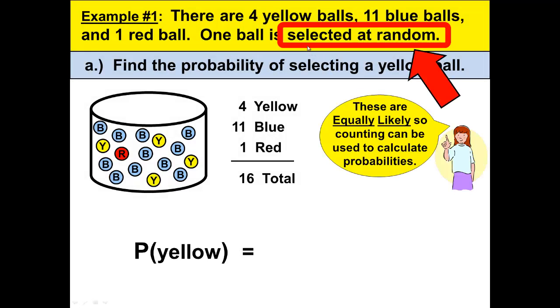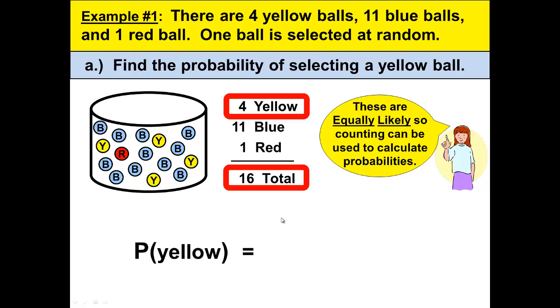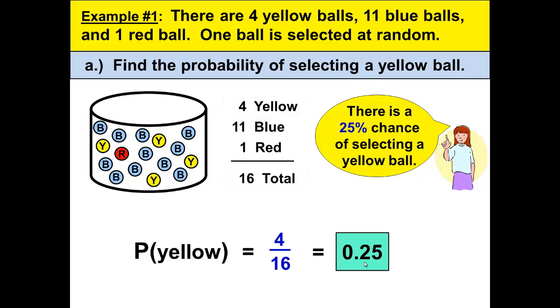The next thing we want to notice is that because we're selecting one at random, these are equally likely, so counting can be used to calculate the probabilities. So how many yellow do we have? Well, we have 4 yellow out of the 16, so that's 4 sixteenths. I can take the calculator and, well, I can just reduce it or take the calculator and divide it. 4 sixteenths would reduce to one-fourth. I could write that as one-fourth or 0.25. And that would give us the probability of selecting a yellow ball is 0.25. Or, I could say that there is a 25% chance of selecting a yellow ball if I wanted to write it in percent form.